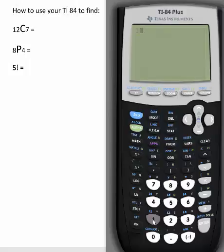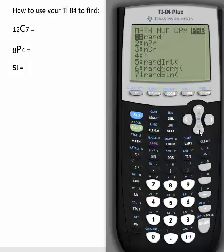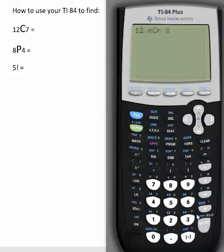Here's how you do it. First of all, you enter 12 at the home screen. Then you go to math. Then you scroll over to probability, PRB. And you can see number 3, it's nCr. Press enter. And then put 7.